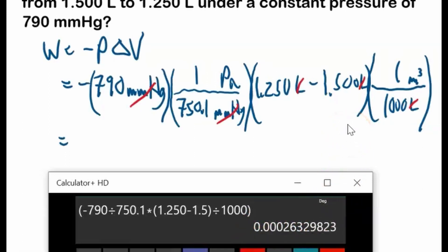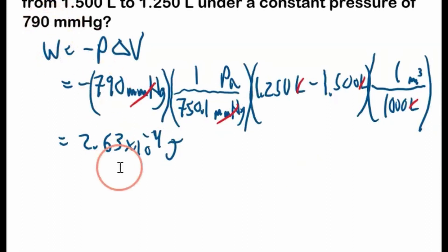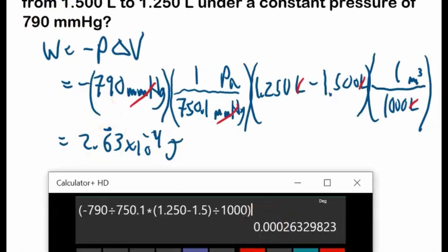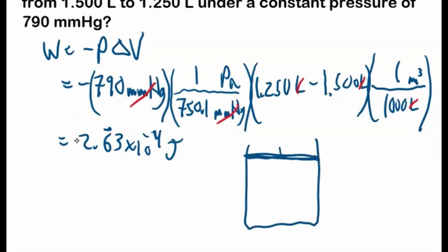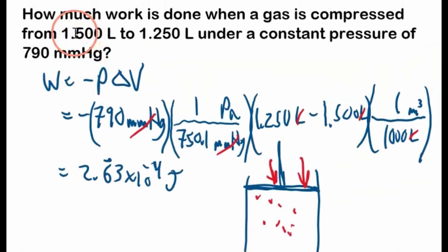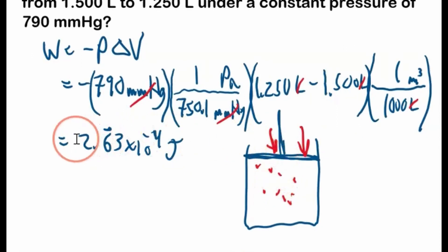The result is 2.63 times 10⁻⁴ joules — to two significant figures. This is a positive number, which means work is done on the system. Positive means the system gains energy. We're going from 1.5 to 1.25 liters, getting smaller by pushing it down — we're compressing the gas and putting energy into it. That's why this is positive.